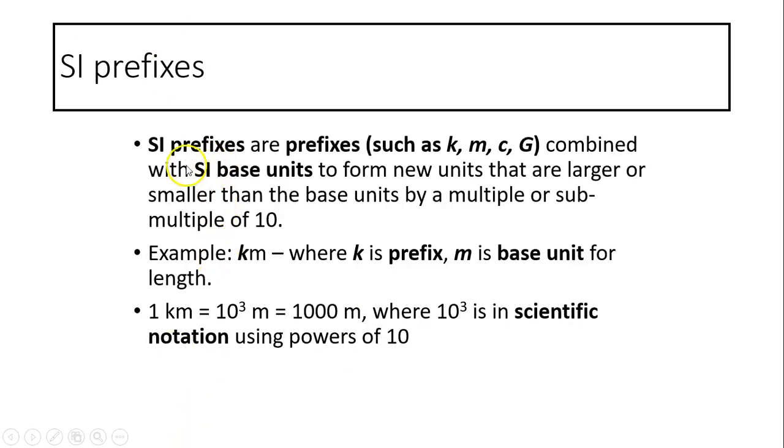SI prefix. SI prefixes are prefixes such as the symbols K, M, C, or G, or some other ones like mu, P, N. Combined with SI base units - the SI base units are meter, second, gram - to form a new unit that are larger or smaller than the base unit by multiples or submultiples of 10.